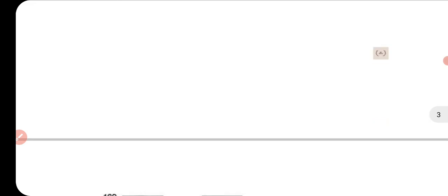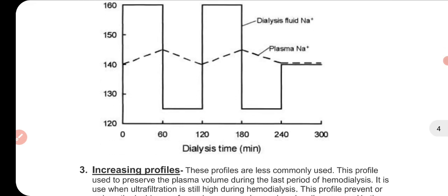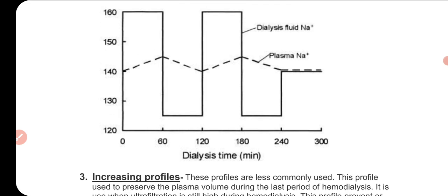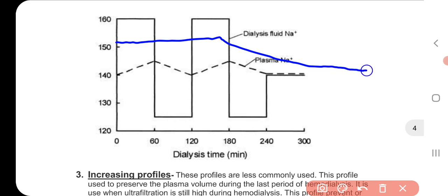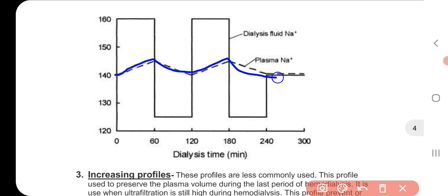The second type is the alternating profile. These profiles were used in the early 1980s with the aim of including alternating fluid shifts across the cellular membrane to improve the transport of uremic toxins out of the cell by solvent drag. With the use of these profiles, the incidence of dialysis disequilibrium syndrome is reduced. The alternating profile can help maintain and prevent dialysis disequilibrium syndrome.